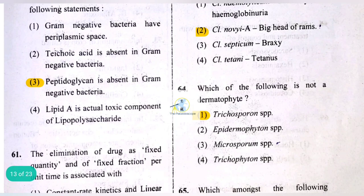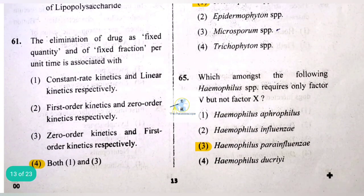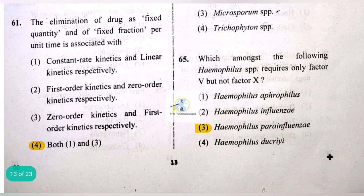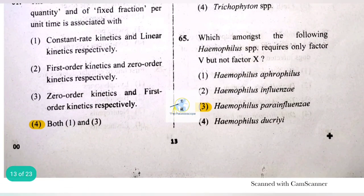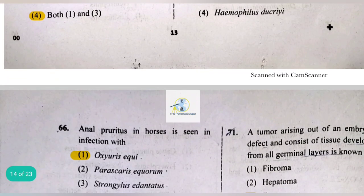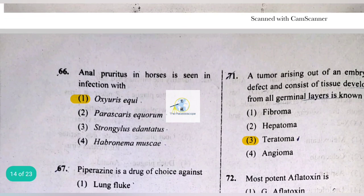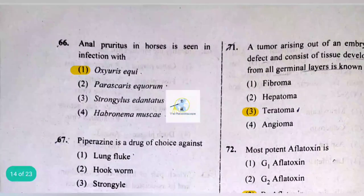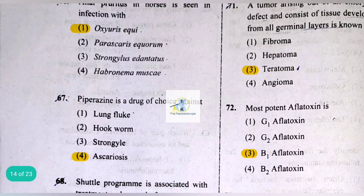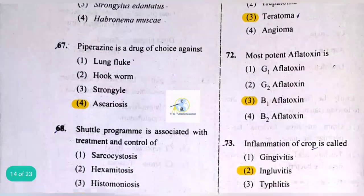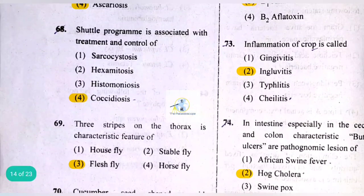Among Haemophilus species, Haemophilus parainfluenzae requires only Factor V but not Factor X. Anal pruritus in horses is seen in infection with Oxyuris equi. Piperazine is the drug of choice against ascariosis. The shuttle program is associated with the treatment and control of coccidiosis.